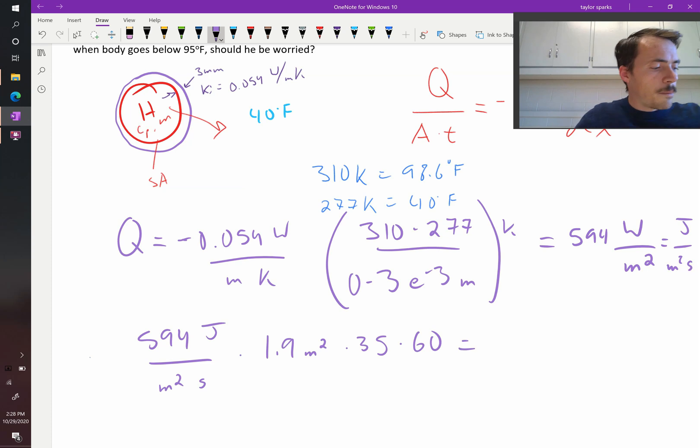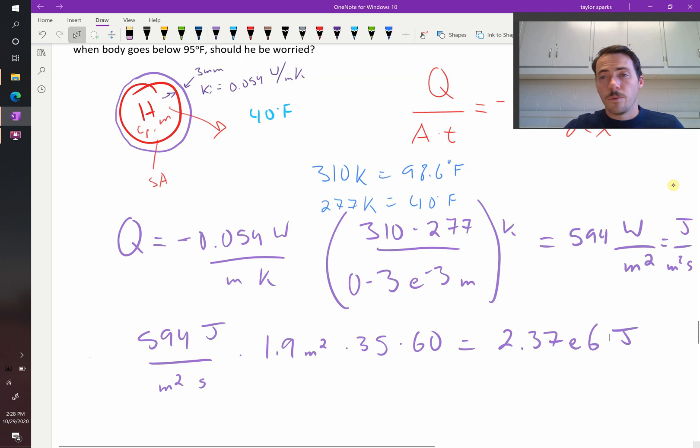And we're going to end up with the total amount of heat lost in this race, which is 2.37 million joules. 2.37 e to the sixth joules. That's how much heat technically gets lost with this approach.